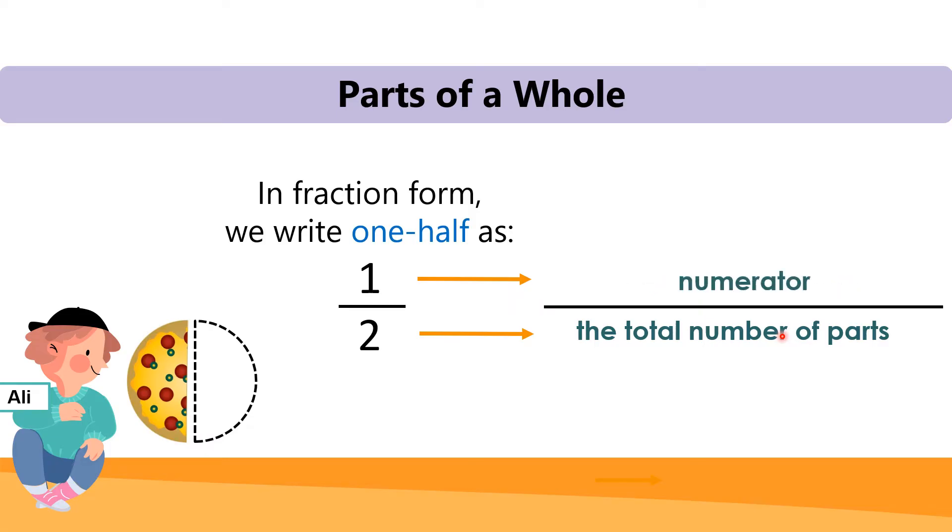Now, the number on top is called the numerator. And the number at the bottom is called denominator. If you're confused of which one is which, just remember D for denominator and D for down. So the number down here is the denominator.